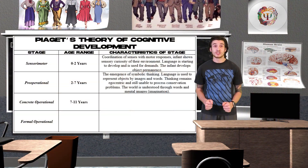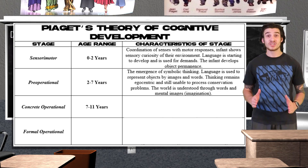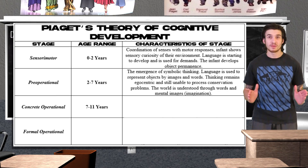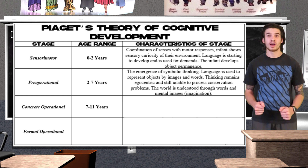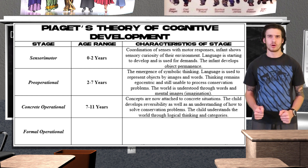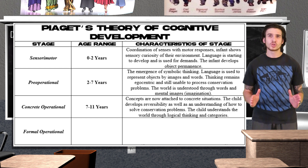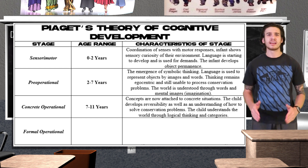From ages 7 to 11, children enter the concrete operational stage. Piaget considered this a major turning point in the child's cognitive development because it marks the beginning of logical or operational thought. According to Piaget, during this stage children fully gain the mental ability to understand mathematical transformations and conservation.